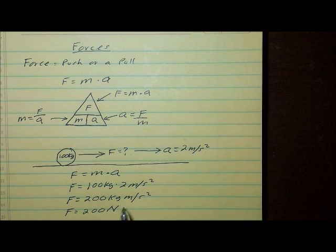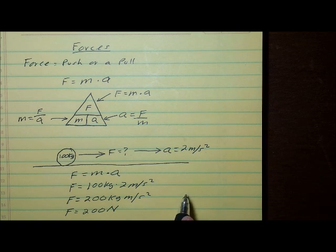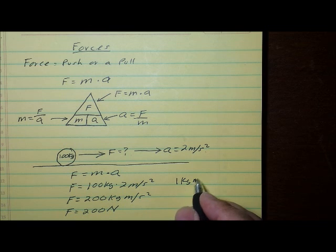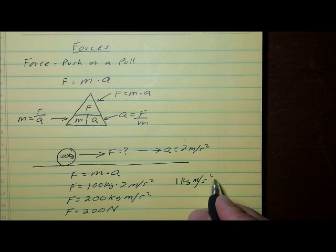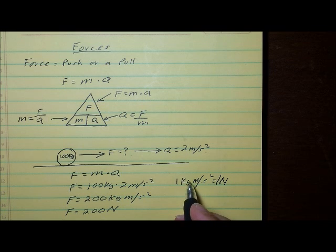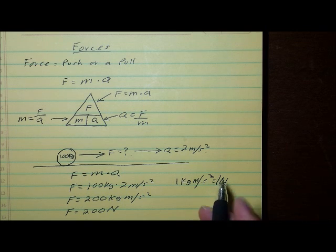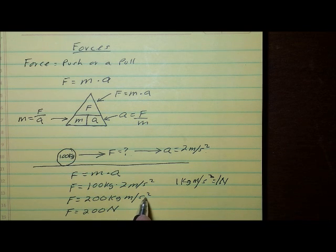So, a single kilogram meter per second squared is equal to a newton. You just might want to remember that. One kilogram meter per second squared equals one newton. Don't forget that. So you can use kilogram meters per second squared in your answer, or you can use newtons for your answer. And the answer here is 200 newtons.